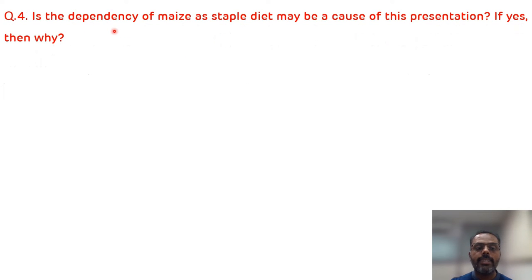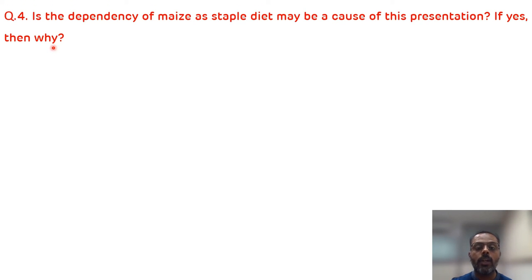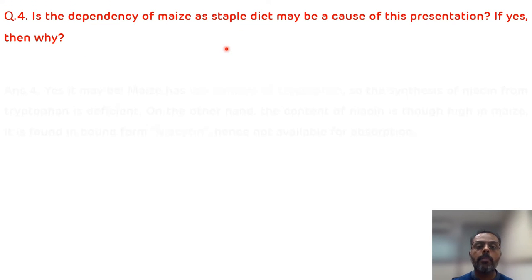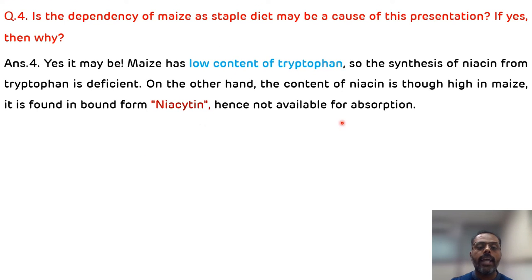The fourth question is: is the dependency on maize as a staple diet a cause of this presentation? If yes, then why? Yes. If the patient is on a staple diet of maize, maize contains a very low amount of tryptophan, so there will be very less conversion of tryptophan to niacin. Maize also contains niacin, but it is present in a bound form known as niacytin; hence, it is not available for absorption. That is the reason for the deficiency of vitamin B3.